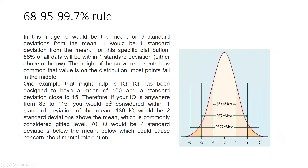Zero here is where the mean equals the median. Then we have plus one standard deviation and minus one standard deviation, then plus two and minus two, and the range extends to minus three and plus three. In this image, zero represents the mean, or zero standard deviation from the mean — meaning there is no deviation from the mean. For this distribution, 68% of all data will be within one standard deviation, either above or below.